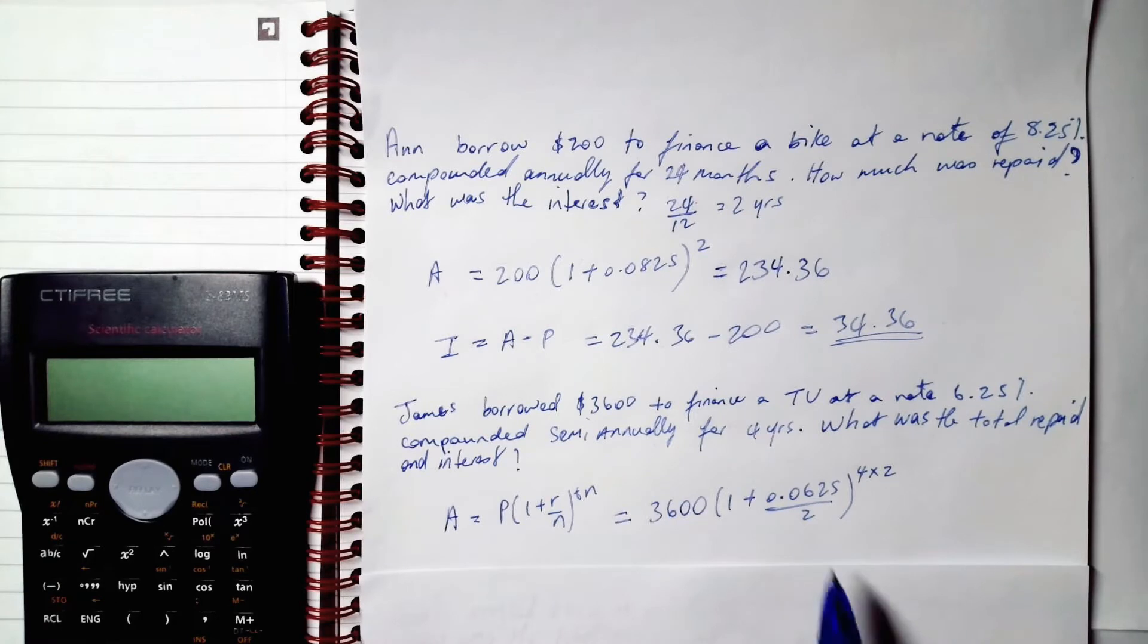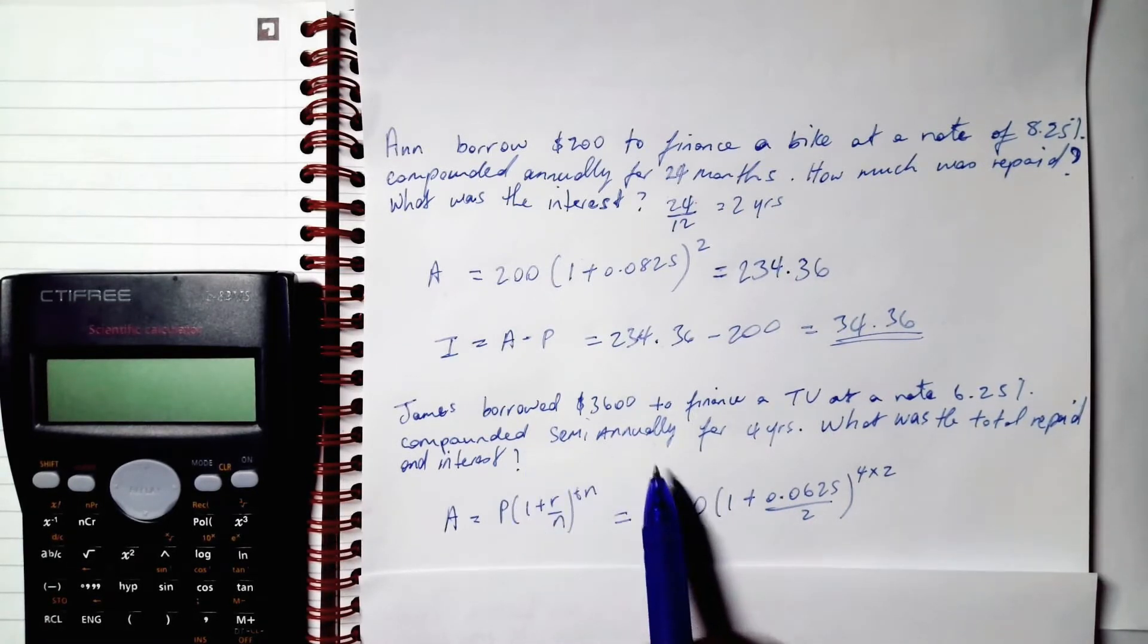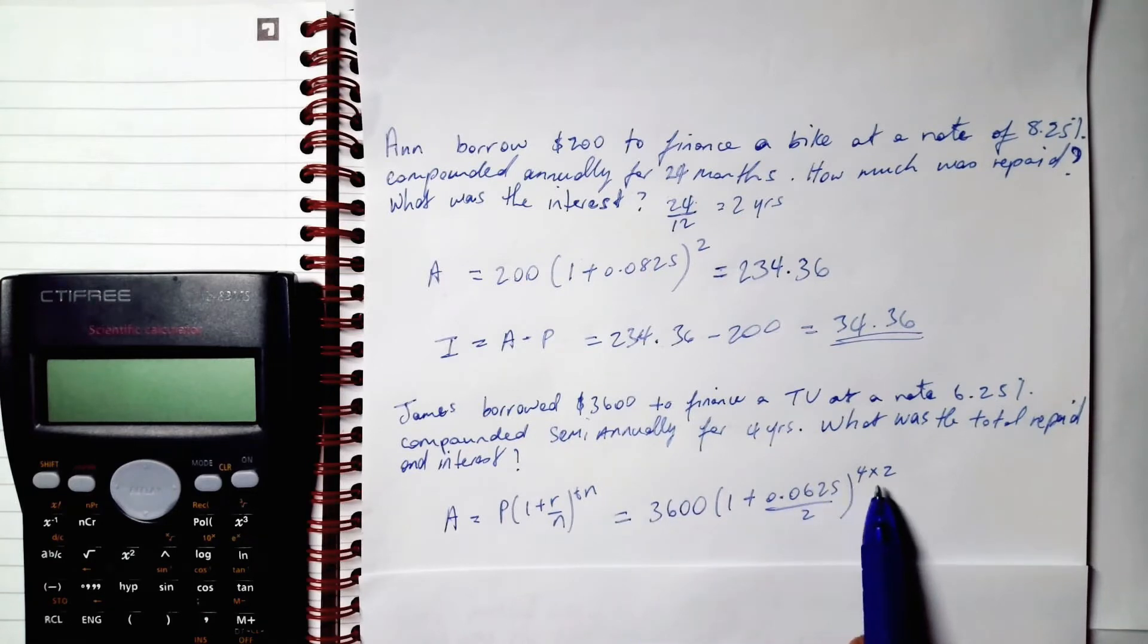All right, this is our setup. Because it's compounded semi-annually our n is 2. Our n is 2, therefore this n has to be 2 as well, this n has to be 2, and our time period annually is 4 years.